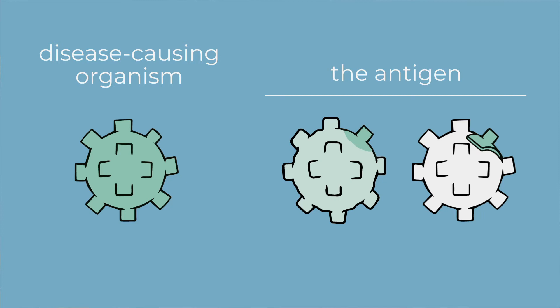If the antigen is a small part of the organism, how can we produce it? It's very simple. We have several steps.